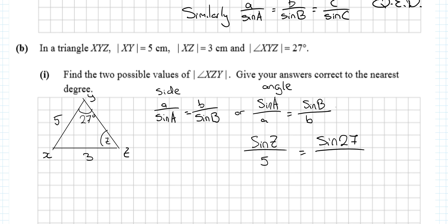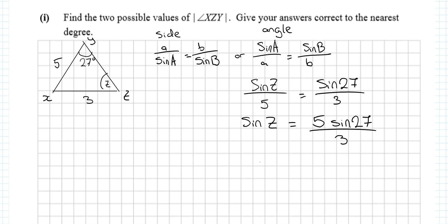Multiply through by 5: sin Z = 5·sin 27° / 3. Let me decimalize the right-hand side — we get 0.7566. Now there's a hint in the question: find the two possible values.